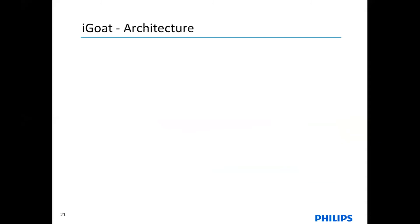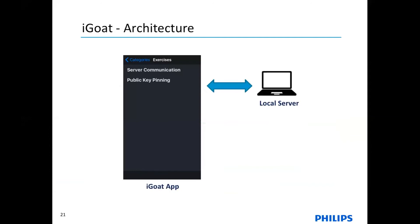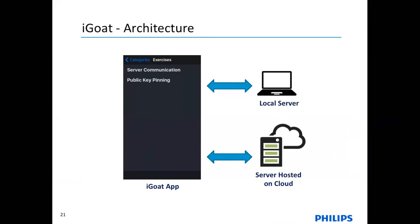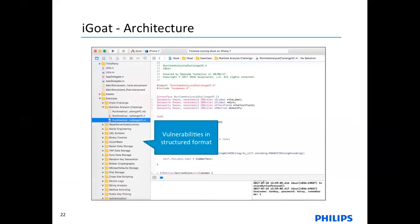iGoat architecture: for the challenges, we run one server locally that is written in Ruby and we have one server hosted on the cloud. The approach is very straightforward and the vulnerabilities are in a structured format. They are grouped into categories like crypto challenges, runtime analysis challenges, social engineering, and local storage. If you are a newcomer or not an iOS developer and still want to learn, you can open the Xcode project, pick any vulnerability you want to study, and check the code written inside that challenge. It's as easy as it looks.